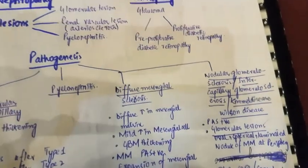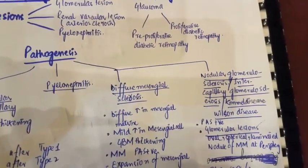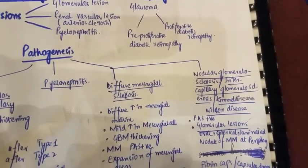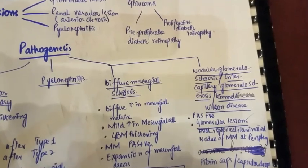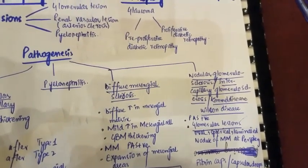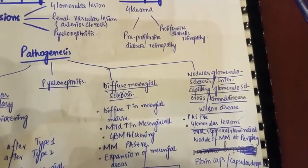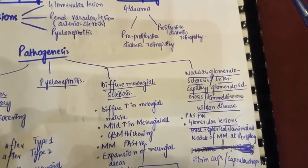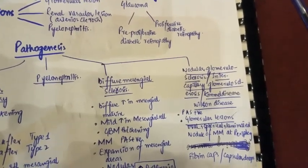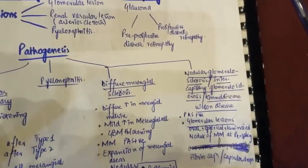Pyelonephritis is acute or chronic inflammation of the kidney, which begins in the interstitial tissue and then affects the tubules. The pattern seen in pyelonephritis is necrotizing papillitis, meaning papillary necrosis, which is the most common pattern in diabetics.